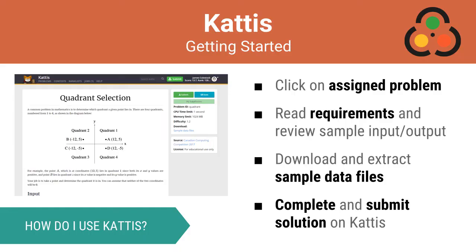Kattis hosts coding problems of varying difficulty and you have the ability to search for those that interest you. Irrespective of the problem you end up choosing, however, the process is the same. You start by clicking on a problem and reading it closely. Once you understand the solution requirements, you download and extract the sample data files for the problem. Then you code a solution in your language of choice and submit it online to Kattis for acceptance.